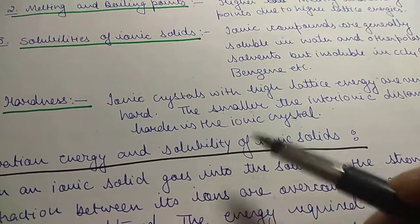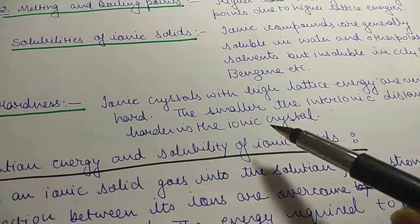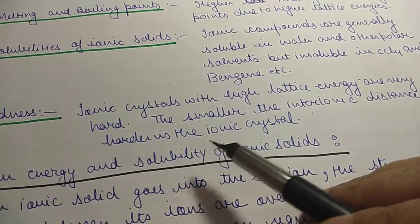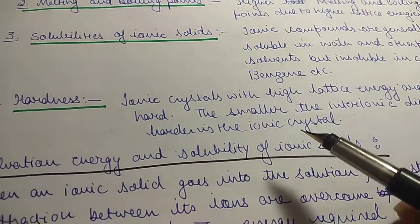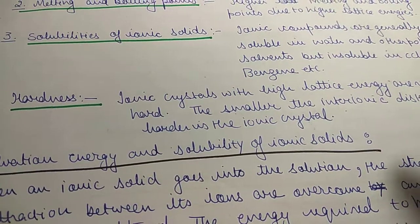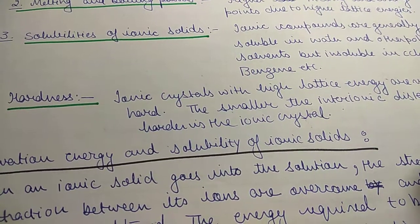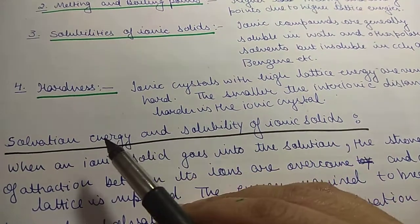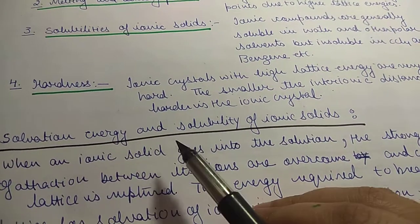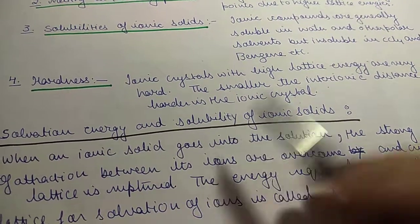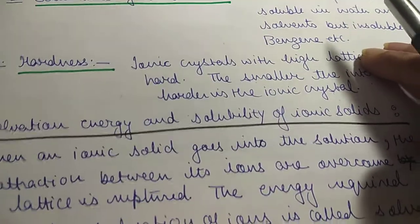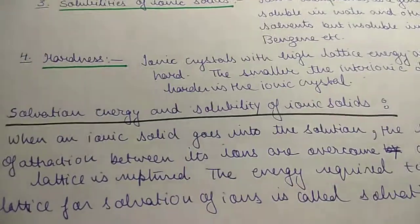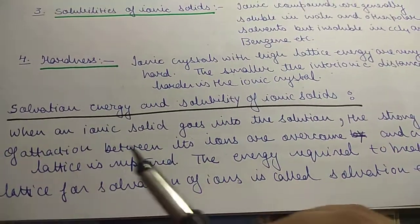Fourth, hardness — ionic crystals with high lattice energy are very hard. They are hard because the smaller the interionic distance, the harder the ionic crystal. So the lesser the interionic distance, the greater the hardness.